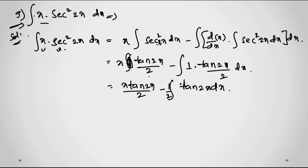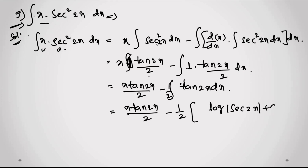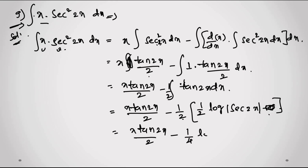The integral of tan(2x) dx = log|sec(2x)|/2. So bringing in the factor of 1/2, the final answer is: x·tan(2x)/2 minus (1/4)·log|sec(2x)| + c. This is the answer for question 9.